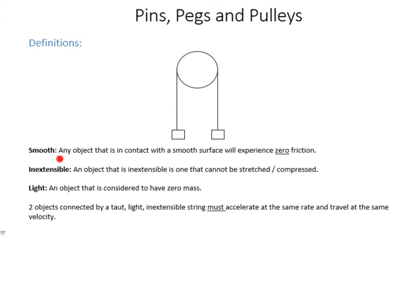If an object is described as being smooth, that basically means any object in contact with it will experience no friction. A smooth slope is one which is not rough, so anything sliding down experiences no friction. Inextensible means you usually see this in the context of a string where basically you can't extend it. It's not like a spring where you can stretch it.